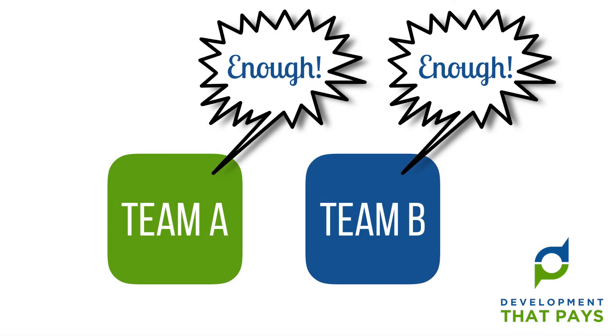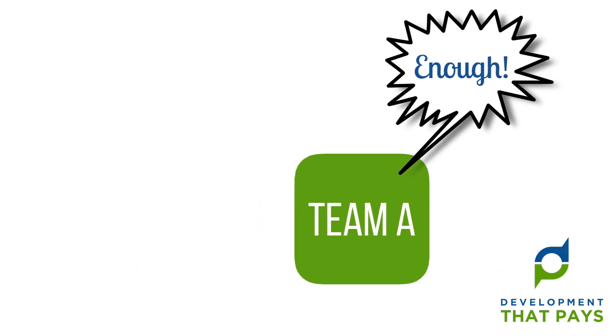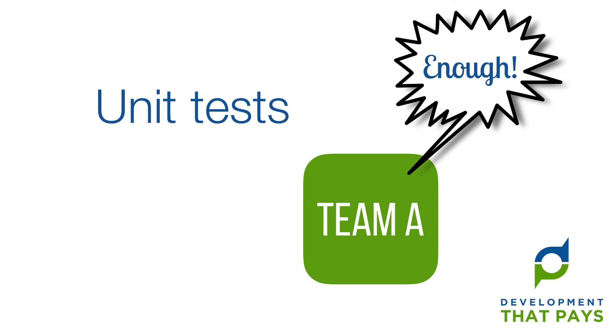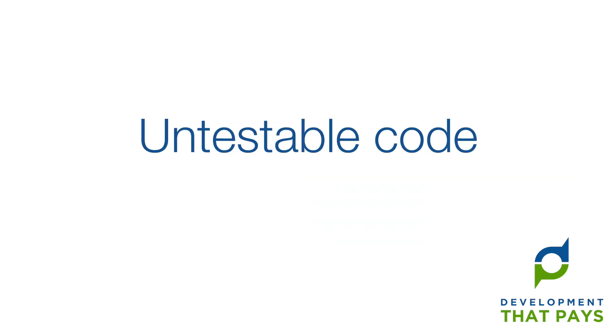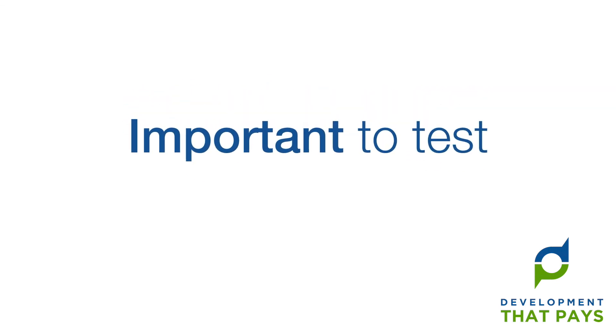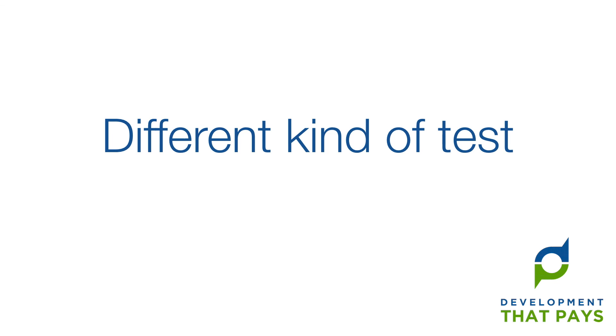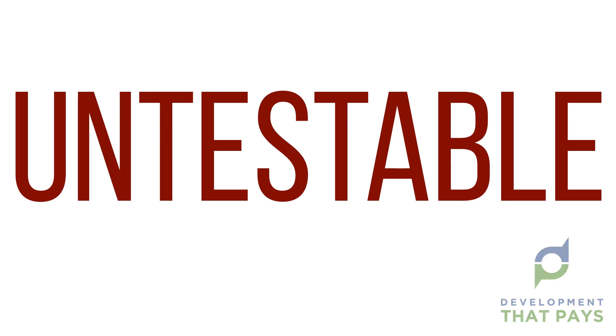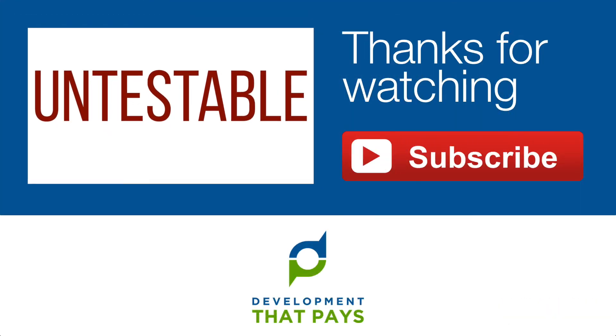Remember our two teams? As I'm sure you guessed by now, the team that asked to write tests and got their wish had asked to write unit tests. We spent two weeks battling with untestable code. Tests were produced, but most were tests of things that turned out to be easy to test, rather than things that were important to test. Our time would have been better spent on writing a different kind of test — a kind that can be applied to any codebase, no matter how untestable the code may be. And that's what we'll be looking at in the next episode.